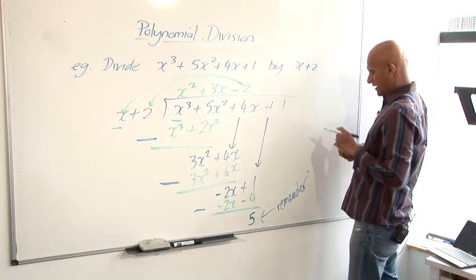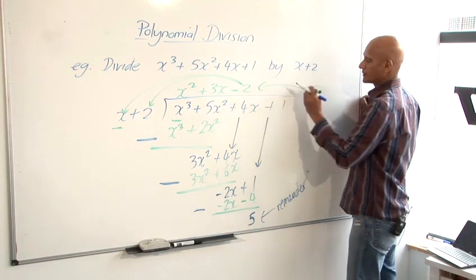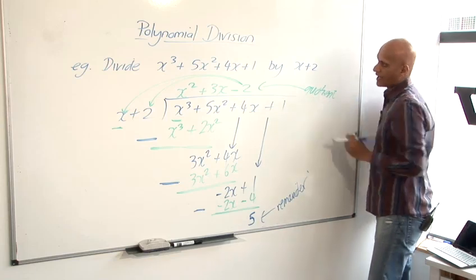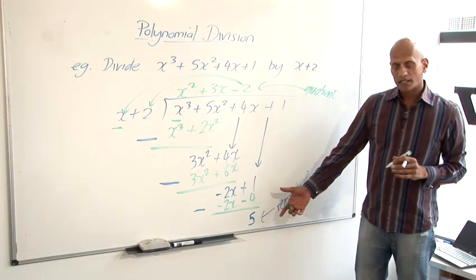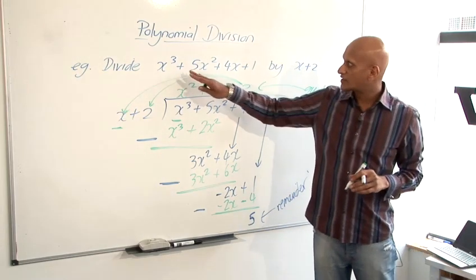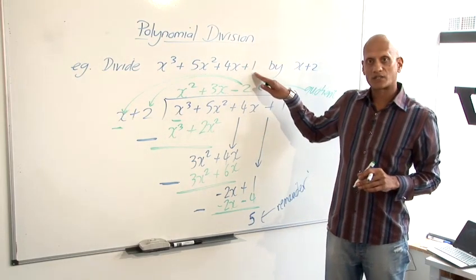And that at the top here is going to be called my quotient. Now, because I had a remainder, the remainder wasn't 0, that means that x plus 2 is not a factor of x cubed plus 5x squared plus 4x plus 1.